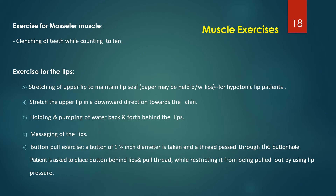Exercises for the lips include: stretching of the upper lip to maintain a lip seal; holding a piece of paper between the lips to improve lip tonicity; stretching the upper lip downward toward the chin; holding and pumping of water back and forth behind the lips; massaging of the lips; and the button-pull exercise, which involves a button of one to one-and-a-half inches diameter on a thread — the patient places the button behind the lips and pulls the thread to exercise the perioral musculature.